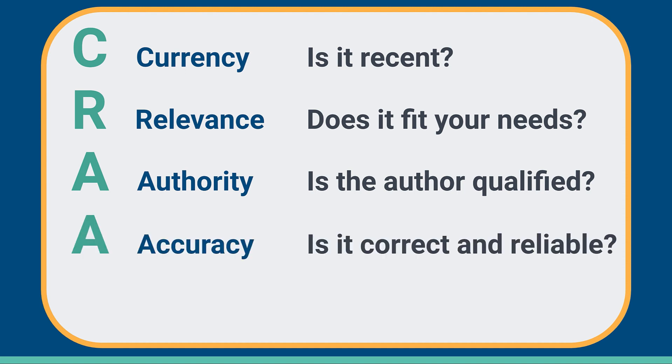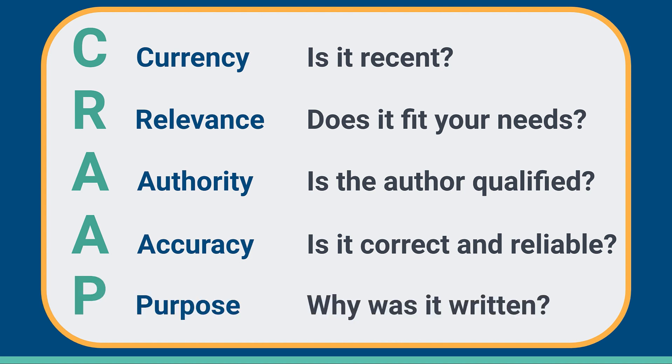The second A is for Accuracy — is it correct and reliable? And finally, the P is for Purpose — why was this written?